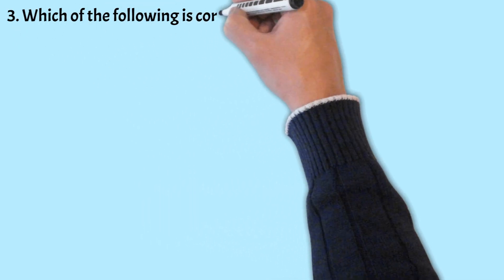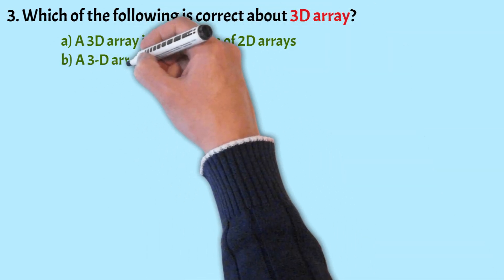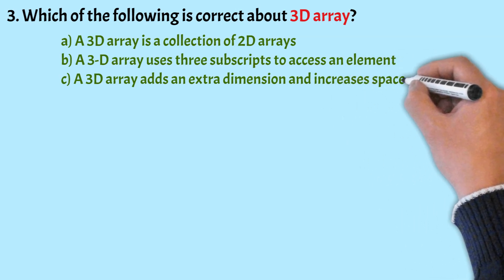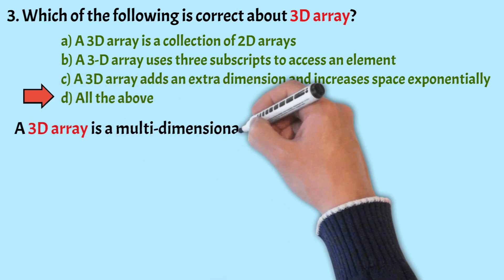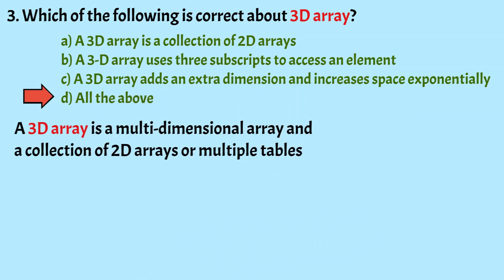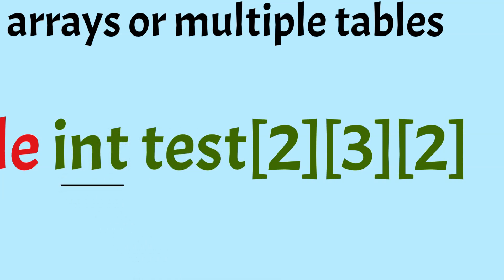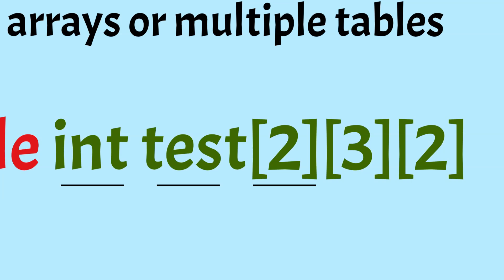Moving on to the next question. Which of the following is correct about 3D Array? The options are: a 3D Array is a collection of 2D Arrays; a 3D Array uses 3 subscripts to access an element; a 3D Array adds an extra dimension and increases space exponentially; and all of the above. The correct option is Option D, all of the above. A 3D Array is a multi-dimensional array and a collection of 2D Arrays or multiple tables. In this example, Int shows the array type, Test is the name. The first dimension defines the block size, meaning total number of 2D Arrays. The second dimension defines the rows and the third dimension defines the columns of 2D Arrays.